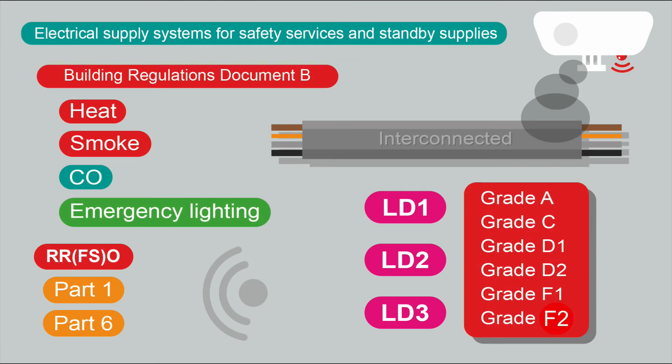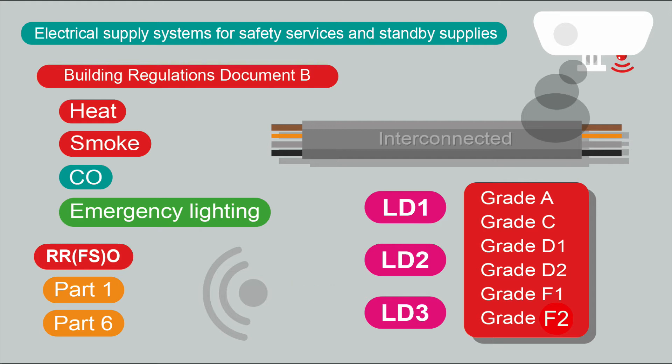Electrical supply systems for safety services and standby supplies is a very early consideration in the design principles. This is to do with services that protect life — protection against fire. You can imagine how complex designs are for large buildings: offices, cinemas, theatres, blocks of flats. For a three-bedroom rewire it's no less important — these are life safety systems that give early warning of fire and help people escape.